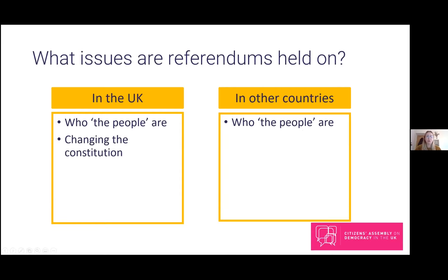The second topic on which we usually hold referendums is changing the constitution — the rules on who has the power to do what. Referendums might be particularly appropriate on issues about where power should lie, so it isn't just the people who already have power who decide. In the UK, most referendums have been on constitutional issues: we had referendums before the establishment of the Scottish and Welsh assemblies, and also a referendum on the voting system.